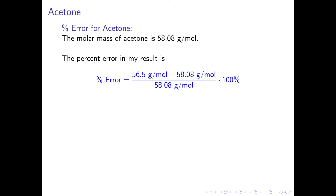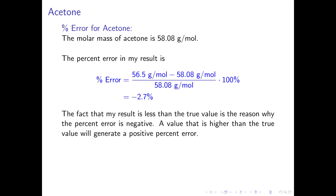Therefore, the percent error in my result can be calculated as my value, 56.5 grams per mole, minus the true value, 58.08 grams per mole, divided by the true value, 58.08 grams per mole, times 100%. This gives a percent error of negative 2.7%. The fact that my result is less than the true value is the reason the percent error is negative. A value higher than the true value will generate a positive percent error.